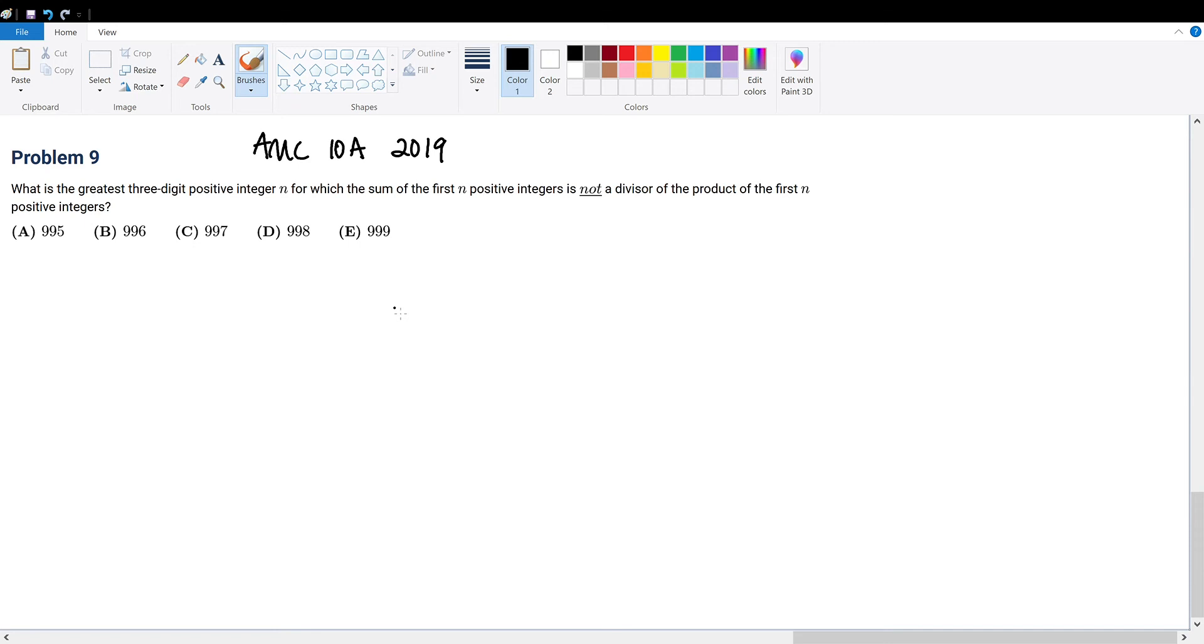AMC 10A 2019, problem 9. What is the greatest three-digit positive integer n for which the sum of the first n positive integers is not a divisor of the product of the first n positive integers?